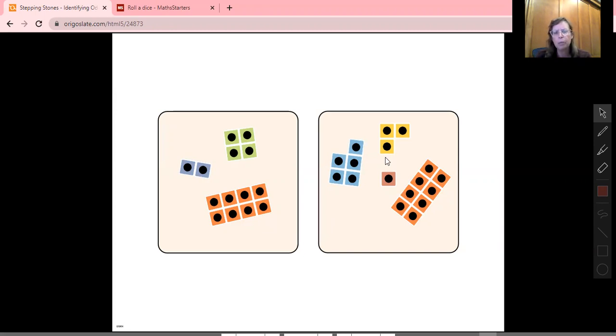So just as a reminder, it might have been a while since you've looked at odd and even numbers. Odd numbers are the numbers that go one, three, five, seven, nine, eleven. So adding two each time from one. And our even numbers are two, four, six, eight, ten, twelve, adding two each time from zero.